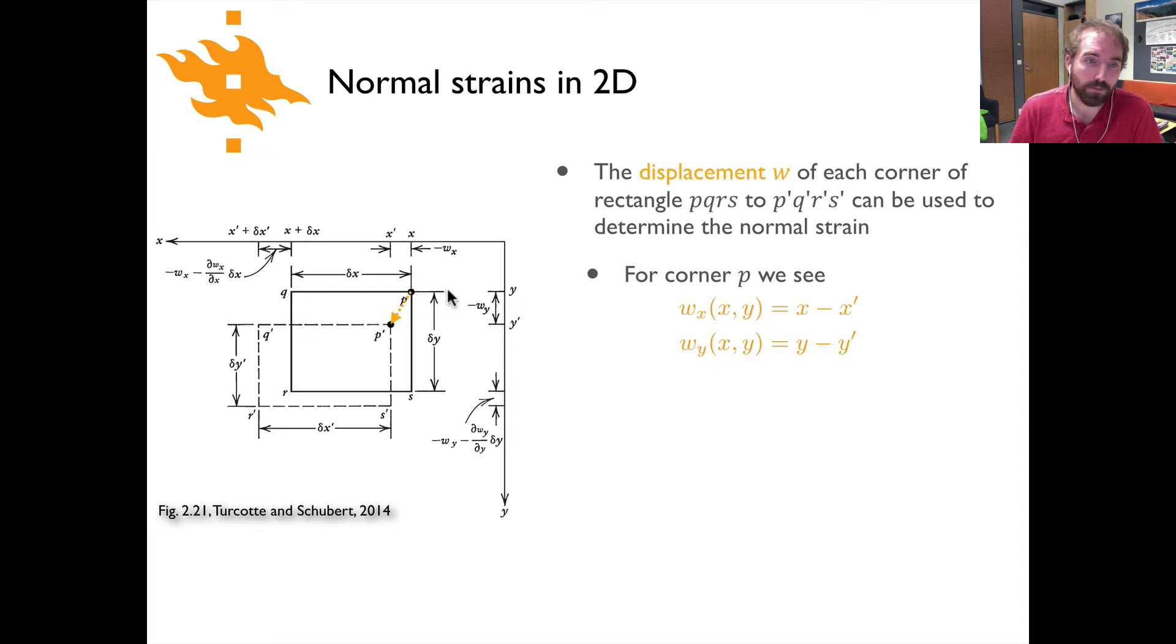The same thing could be said for the y-axis here, that we start at position y and we move to position y'. And if you're curious about why this is a minus sign here, it has to do with our convention, that when we're shortening or reducing the length of something, that's going to be a positive strain, and so you'll see that if we have negative values here for the displacement, that would be giving us positive values for the strain.